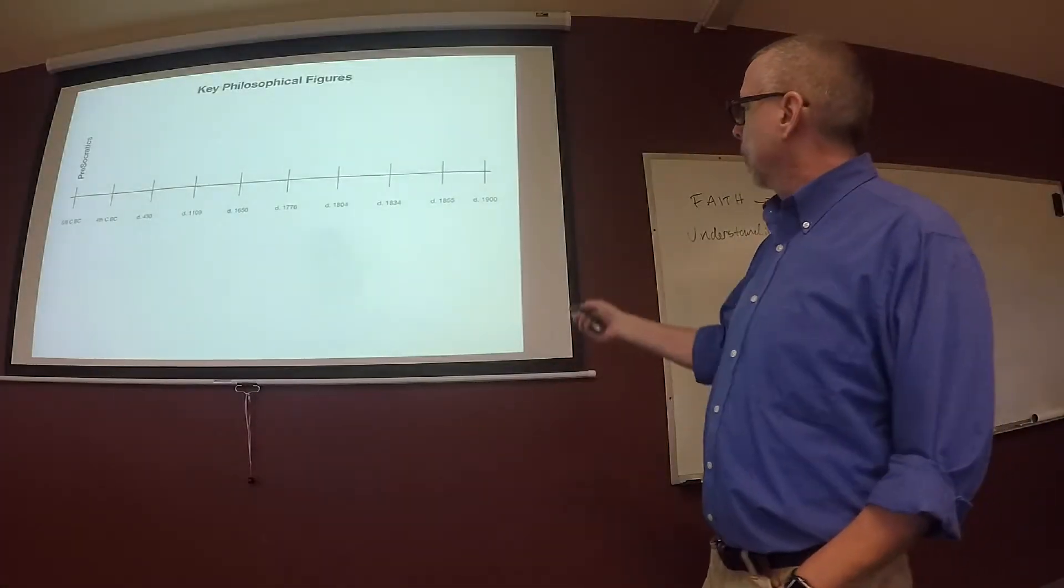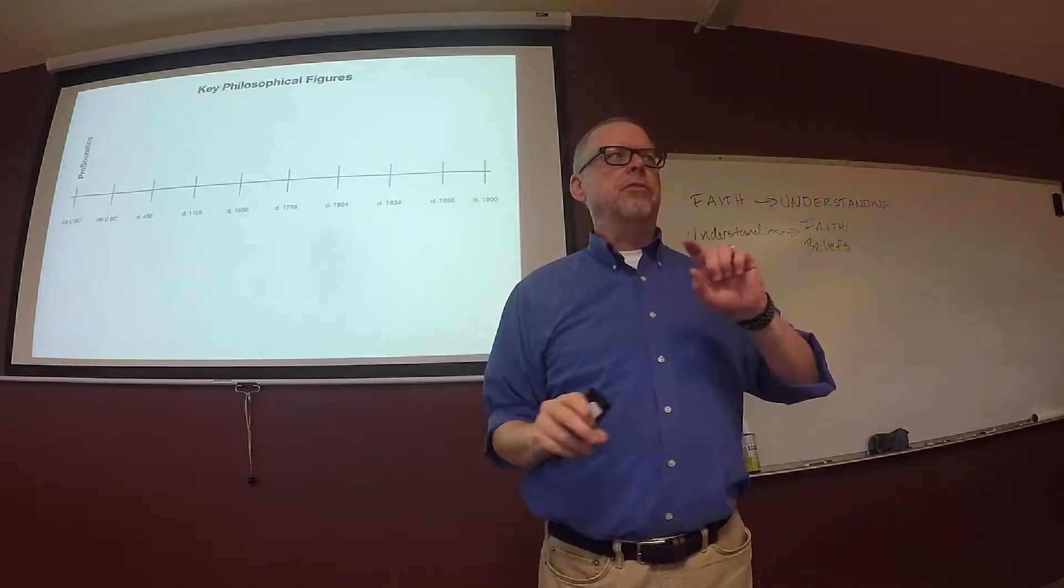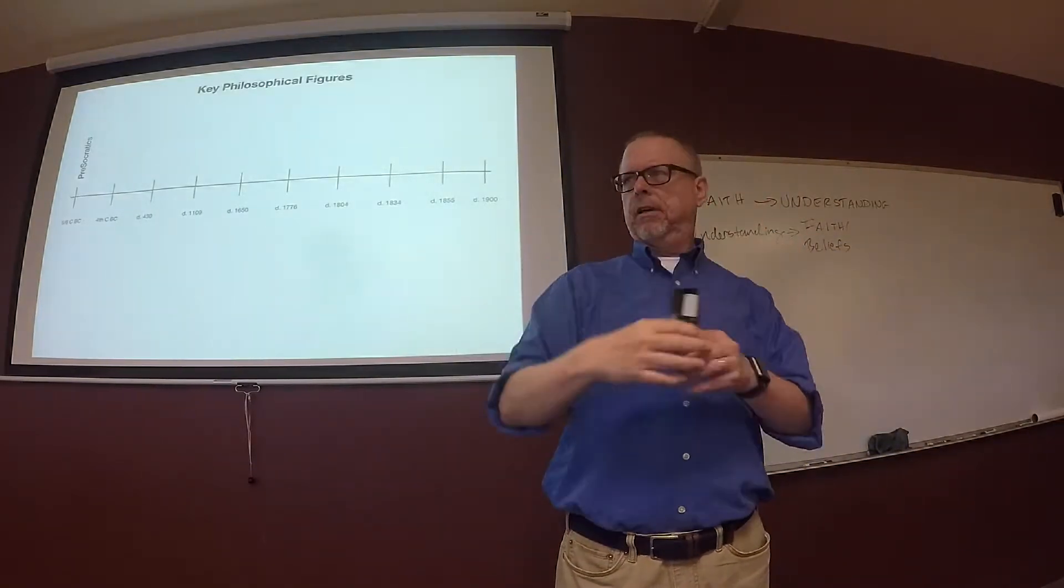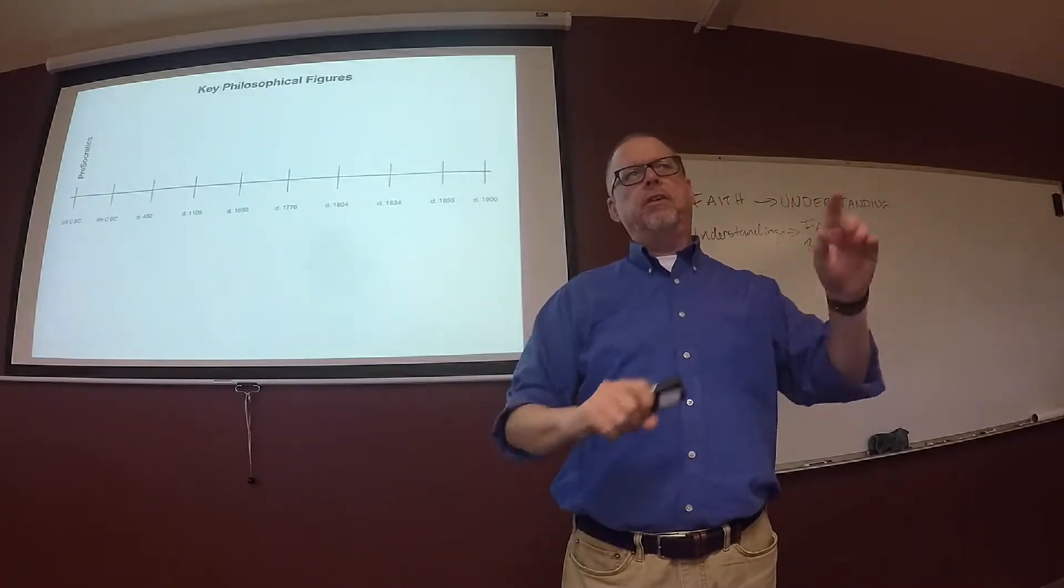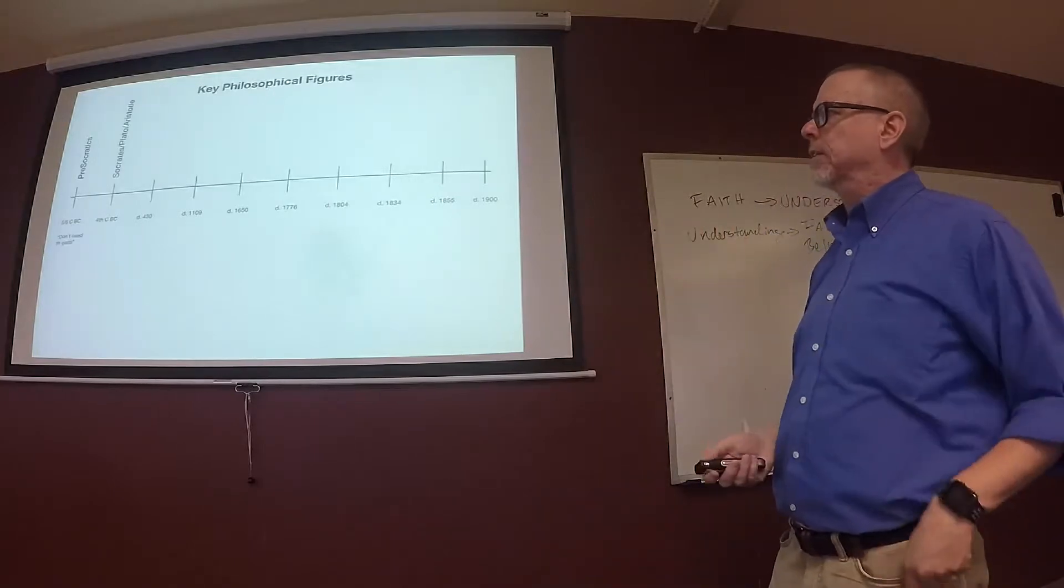before Christ, and we're going to end up like in 1900 here. And so these are philosophers who've really led to what Boghossian is saying. And so how do we get to what he's saying that all Christians are crazy? This is a run through of where these ideas have come from.